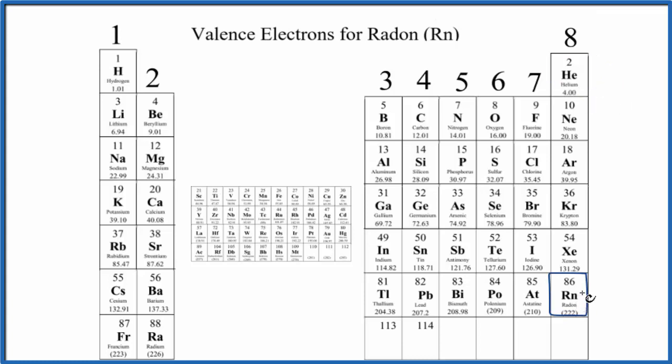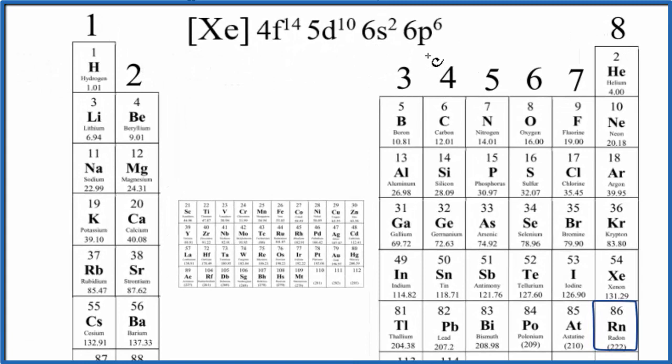So we have our radon here, 8 valence electrons. The other way to tell is to look at the electron configuration for radon. So when we look at the electron configuration, this is the condensed electron configuration, we look for the highest energy level.